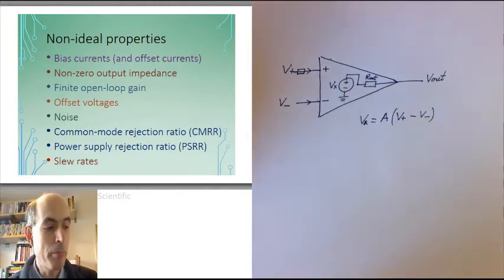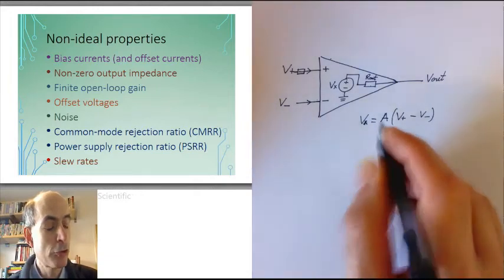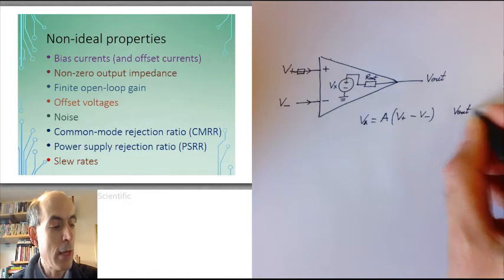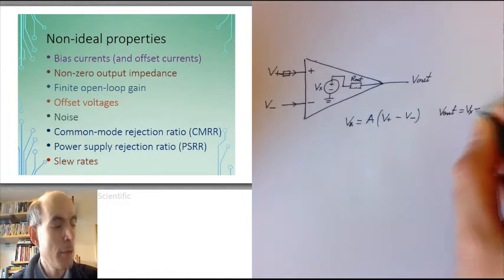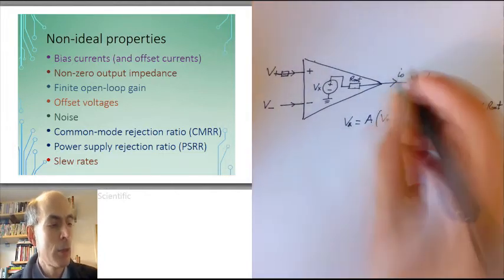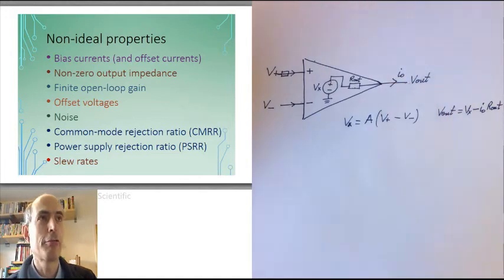In a real op-amp, of course, that's no longer true. Rout is not zero, and Vout would be Vx minus the output current times the output resistance Rout. When I-O, the output current, is flowing in that direction.